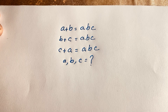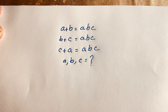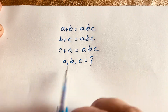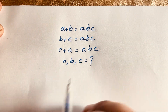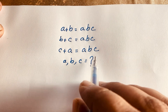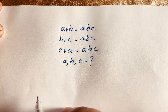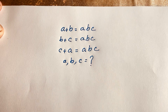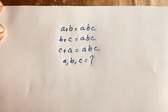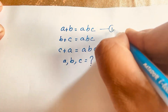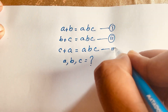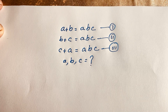Hello everyone. In this video we solve this interesting maths question: how to solve this algebraic question where a plus b is equal to abc, b plus c is equal to abc, and c plus a is equal to abc. Find the value of a, b, and c. This is our first equation, this is our second equation, and this is our third equation.